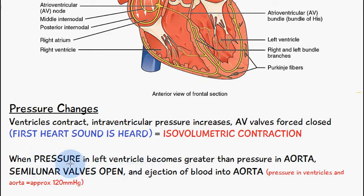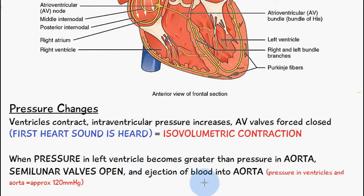When the pressure in the left ventricle becomes greater than the pressure in the aorta, the semilunar valves open and blood is ejected from the left ventricle into the aorta. The pressure in the ventricles and in the aorta at this point is approximately 120 millimeters of mercury.